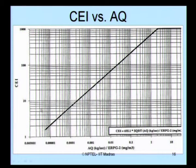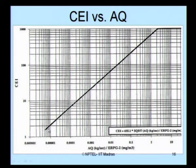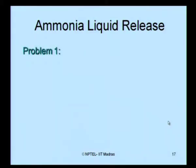This chart clearly shows the chemical exposure index versus airborne quantity for different ERPG values. Looking at the variation of airborne quantity in kg per second for ERPG 2 expressed in mg per cubic meter, for AQ values varying from 0.5 to 10, the chemical exposure index number keeps linearly increasing. Let us now look at an example on ammonia liquid release.